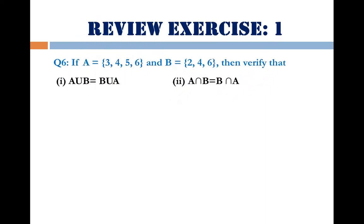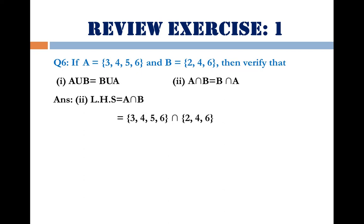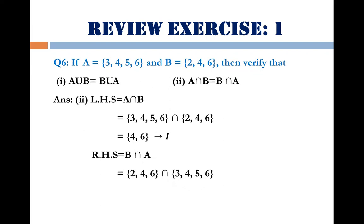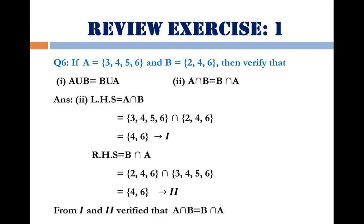Part 2 shows the commutative property of intersection. Left-hand side: A ∩ B — taking only the common elements. Only 4 and 6 are common, so A ∩ B = {4, 6} — answer 1. Right-hand side: B ∩ A — the order is changed, set B comes first. Again 4 and 6 are the only common elements, so B ∩ A = {4, 6} — answer 2. Since 1 and 2 are exactly the same, it is verified that A ∩ B = B ∩ A.